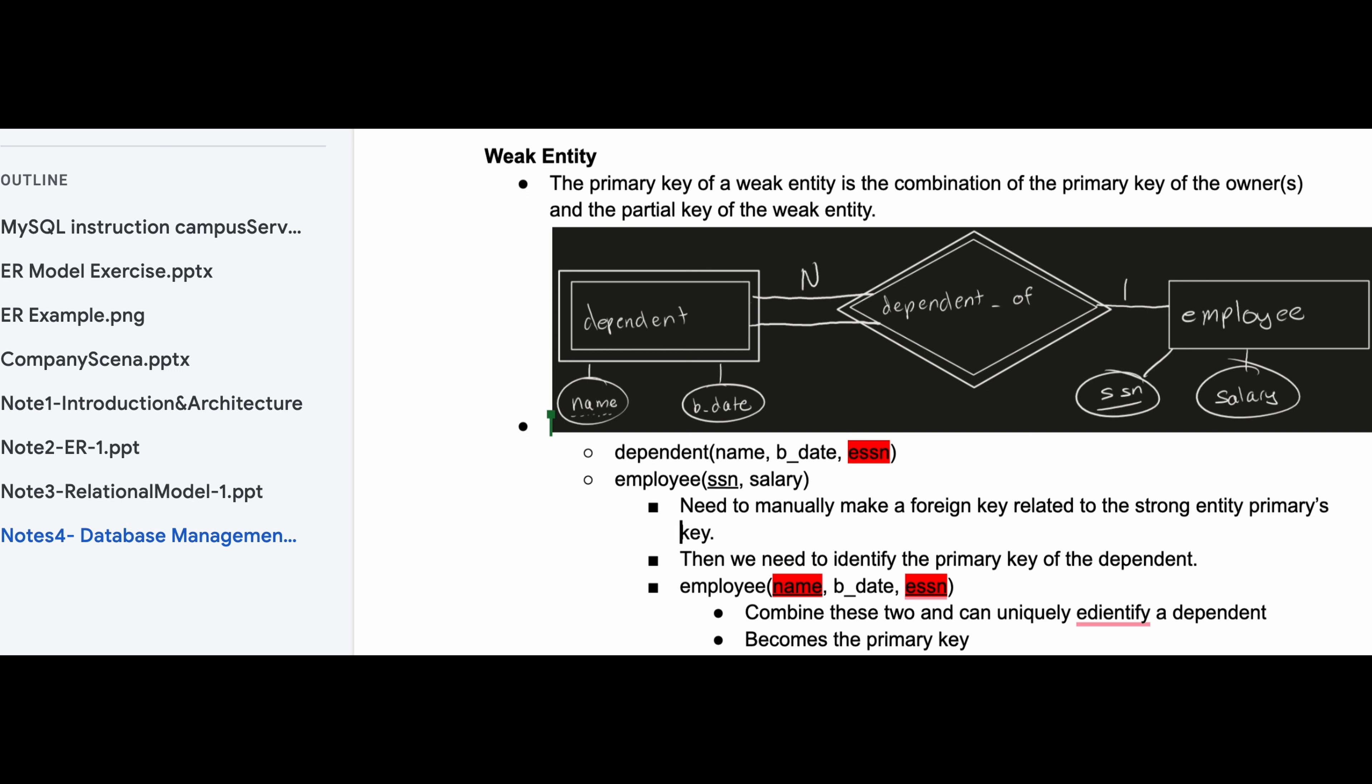Once we do that we can see that our primary key for employee is our SSN. So for our dependent we're going to need the employee SSN to rely on it. So what we need to do is make this foreign key ESSN and that is going to rely on our SSN.